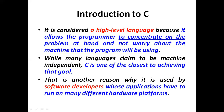C was the first language to achieve the goal of hardware independence. Using C, we can develop any kind of software application. This is why it is used by software developers whose applications have to run on many different hardware platforms and different kinds of configuration-based systems, whether in a Linux environment or a Windows environment.